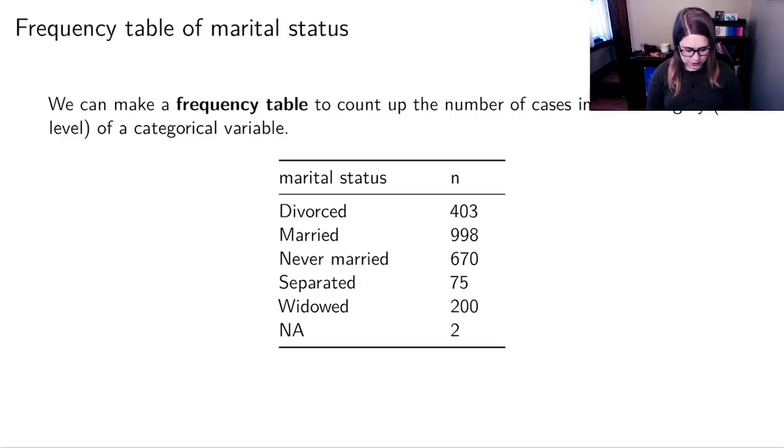So just by looking at this frequency table, I can see that married is the most common marital status. That kind of makes sense. After that, we've got never married, which is sort of like the single category that makes sense to me as well. And we can see the other frequencies there.